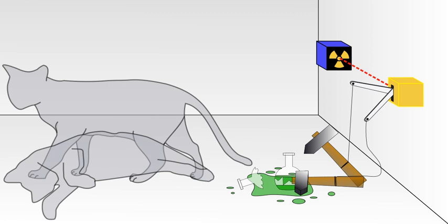The Copenhagen interpretation of quantum mechanics implies that after a while the cat is simultaneously alive and dead. That's a wiki link to quantum superposition. Yet, when one looks in the box, one sees the cat either alive or dead. Not both alive and dead. This poses the question of when exactly quantum superposition ends and reality collapses into one possibility or the other.